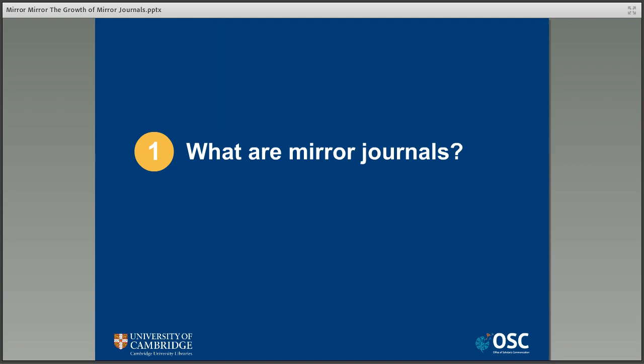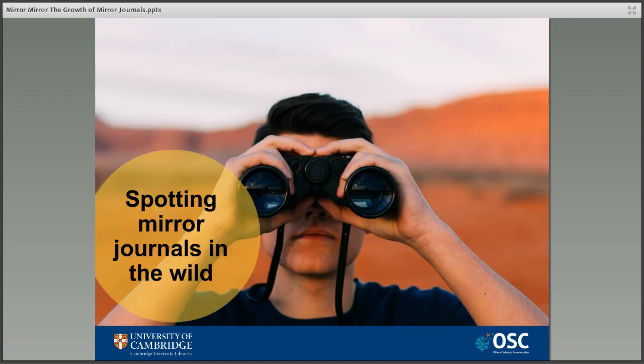So we'll start with the obvious question: what are they? Mirror journals are new open access titles which are being created as a mirror image of existing established journal titles. They're published by the same publisher, the same editorial board and selection criteria, and they publish the same type of research. The crucial difference is their business model — mirror journals are fully open access, in contrast to the original journal which operates under a traditional subscription model.